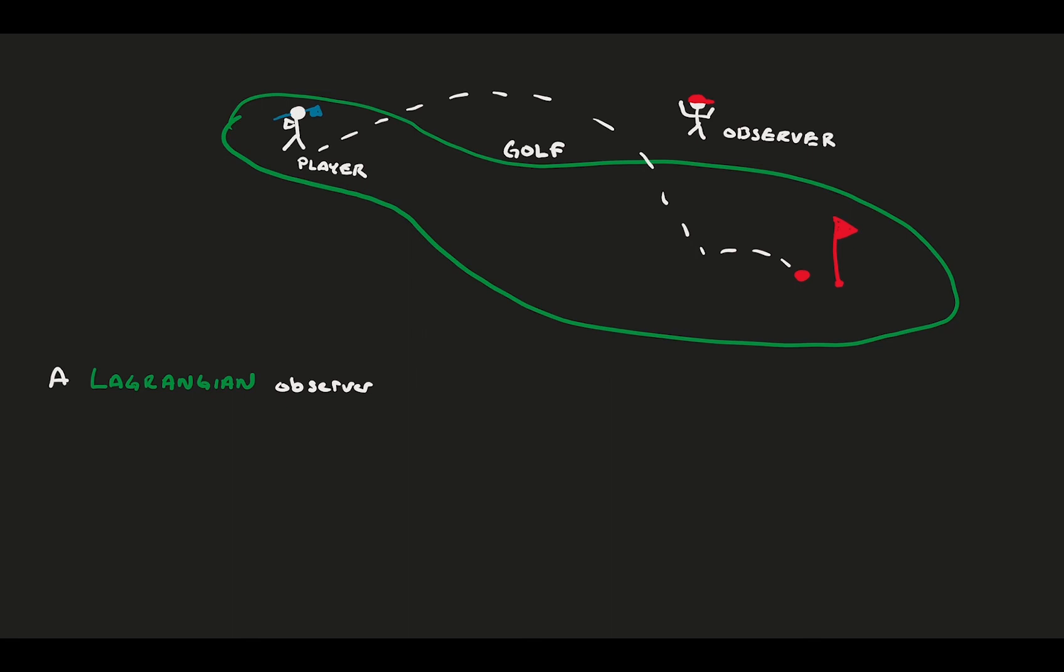If we were a Lagrangian observer, we would follow one single golfer through all 18 holes. At the end, we would know how one golfer scored on all the holes.